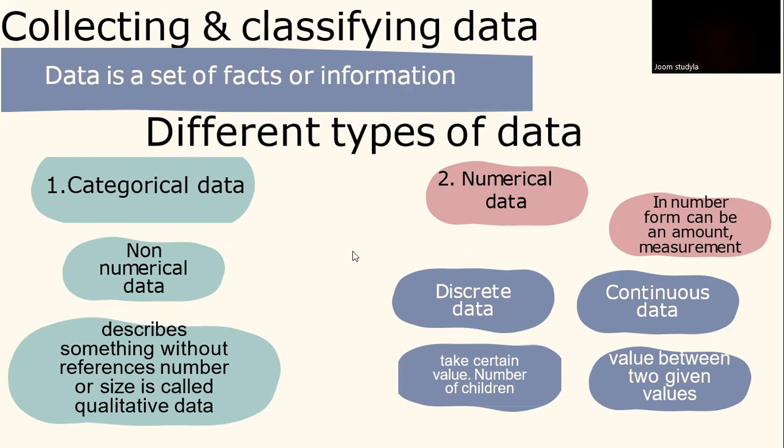So let's begin with identifying the different types of data. First, we have categorical data. What is categorical data? Categorical data is non-numerical data. It names or describes something without reference to numbers or size.